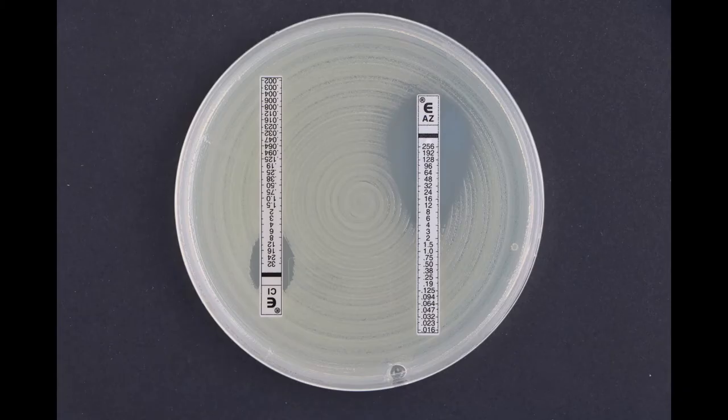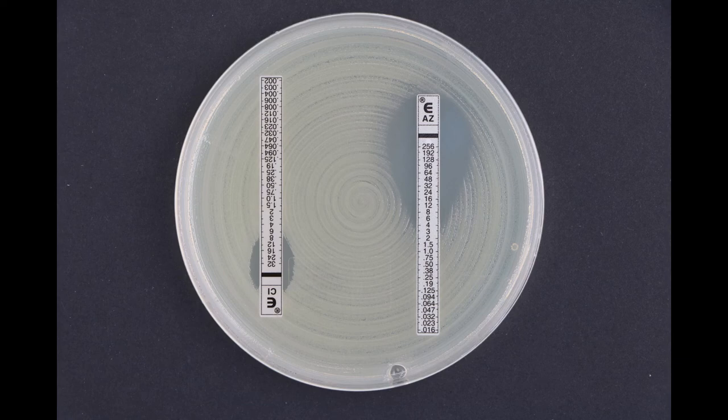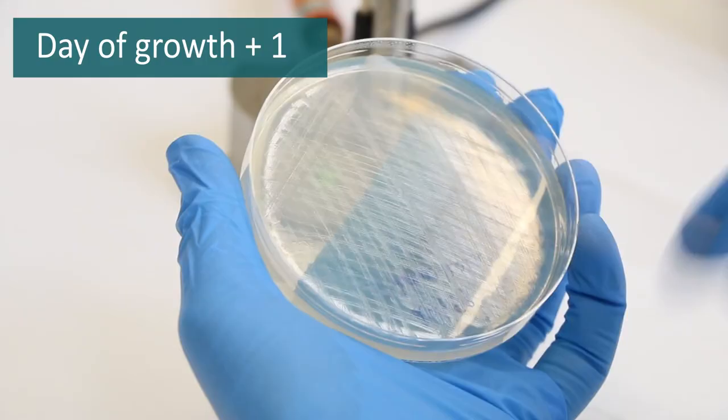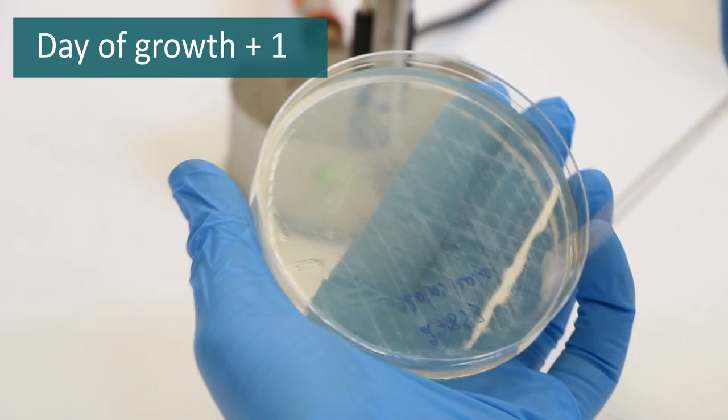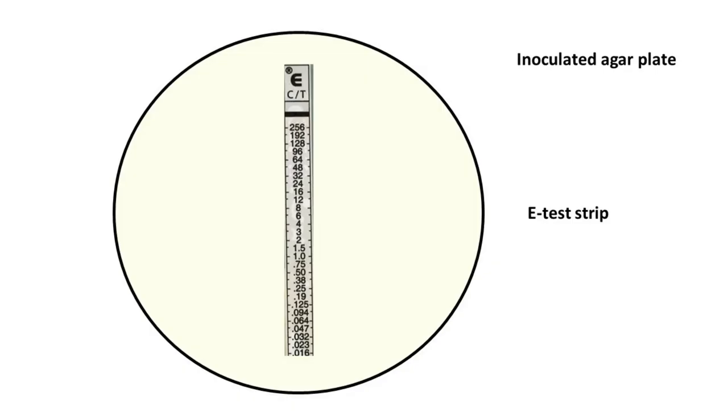The e-test is a method based on a combination of dilution and disc diffusion. It determines the minimal inhibitory concentration of a particular antibiotic. Similar to disc diffusion, a standardized suspension of the bacterium is spread on the surface of a specific solid culture medium. Next, instead of a disc, a thin strip impregnated with a dried exponential gradient of the tested antibiotic is placed on top.